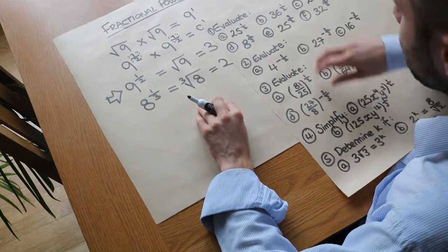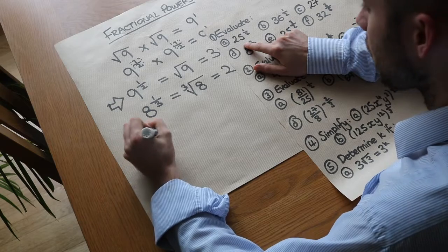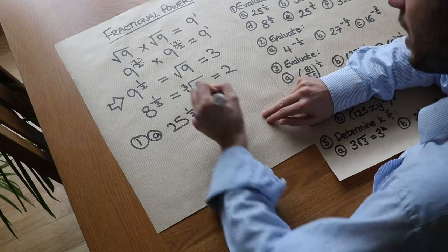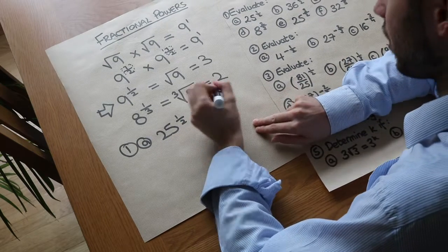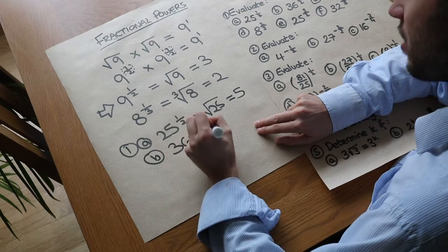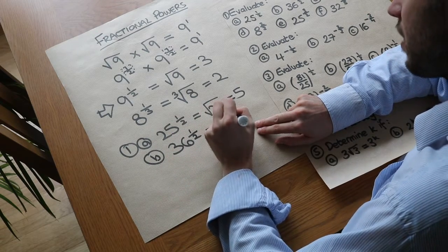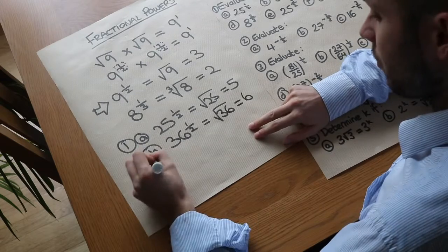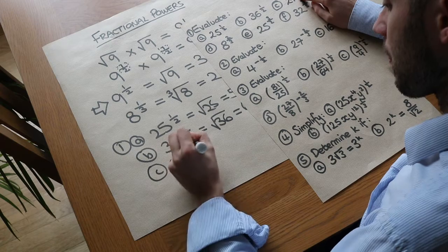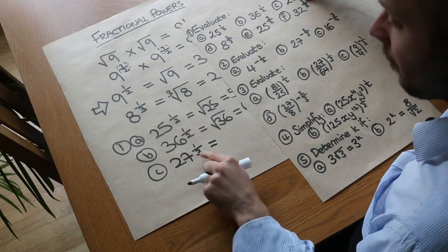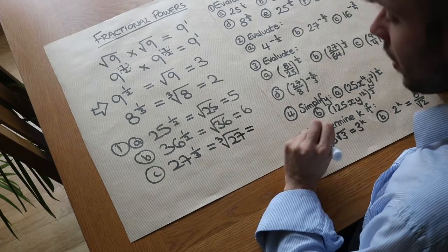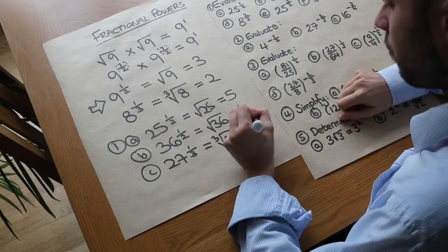Let's use this to answer some questions. For 25 to the power of a half, the square root of 25 is 5. For 36 to the half, the square root of 36 is 6. For 27 to the power of a third, we do the cube root of 27 — what cubed gives 27? It's 3.